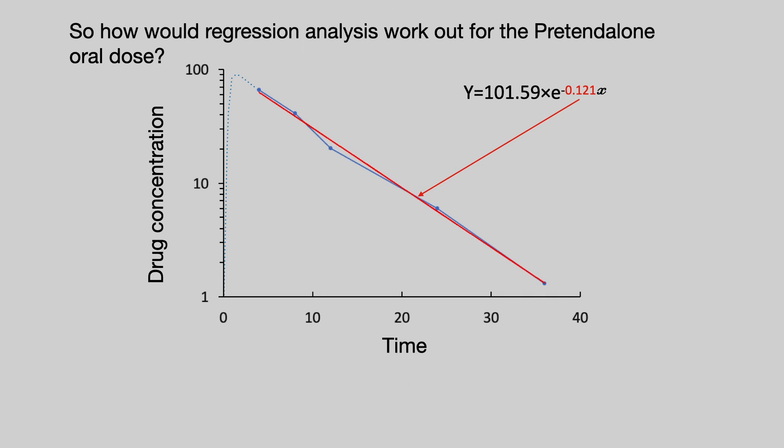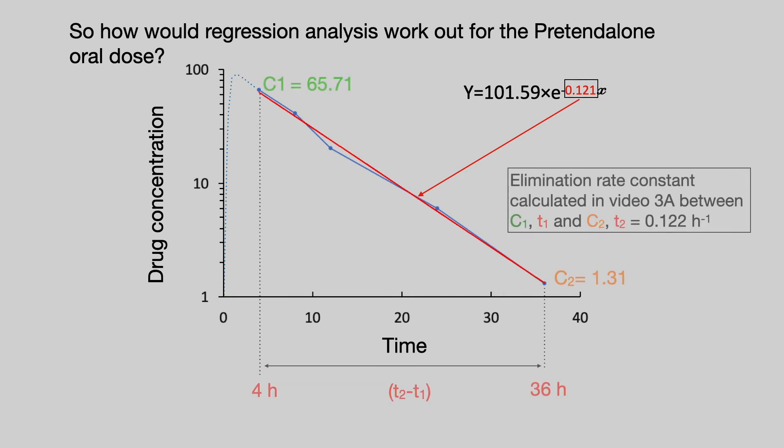And so, if we go back to our original pretend-alone data and put in a line of best fit, you will find that the elimination rate constant using that method is 0.121.